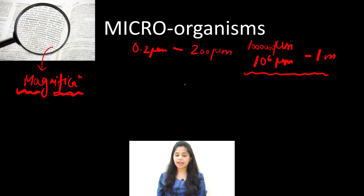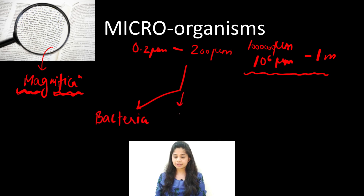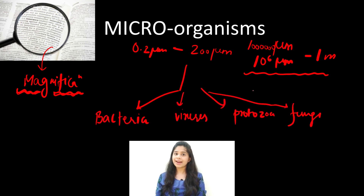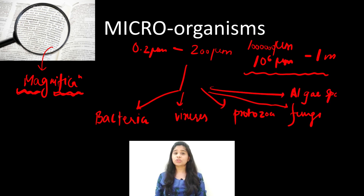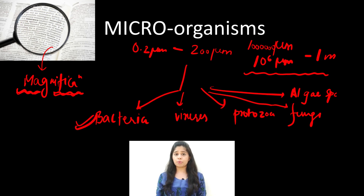Microorganisms can be broadly classified into categories such as bacteria, viruses, protozoa, fungi, and algae species. The king of microorganisms is always bacteria, and it is always seen in higher proportions compared to the other microorganisms.